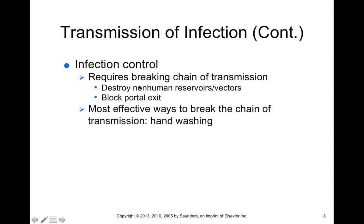Infection control really just boils down to breaking the chain of events in the process of transmission — either destroying the reservoirs and vectors, blocking the portals of exit or entry. The most effective way to break the chain of transmission in most cases is just hand washing. Something as simple as washing your hands or avoiding touching your face too frequently can prevent the spread of infection.